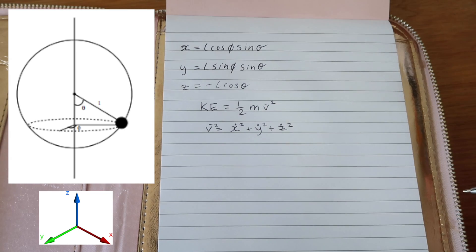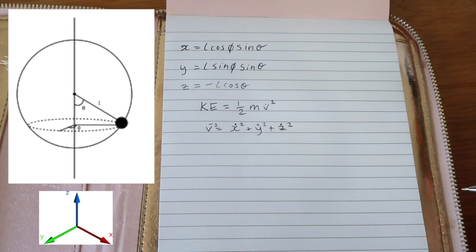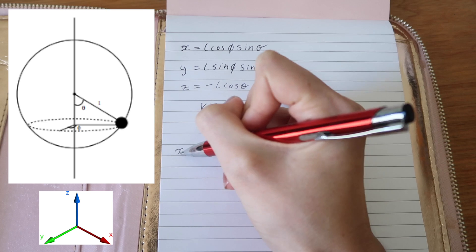Using a dot to represent a derivative with respect to time, we need to find x dot, y dot, and z dot to find our velocity vector.